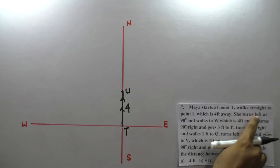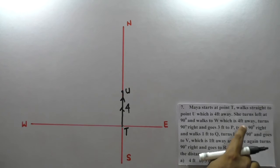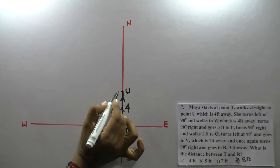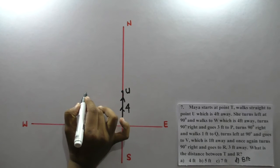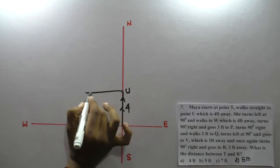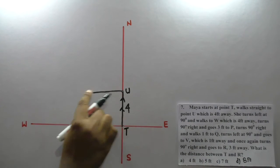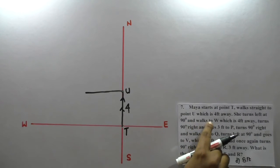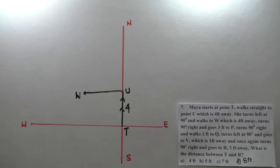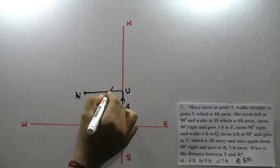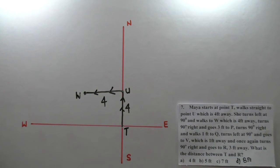She turns left at 90 degrees and walks to W which is four feet away. Left is this side — she turns left at 90 degrees exactly. So W is this point, four feet away.